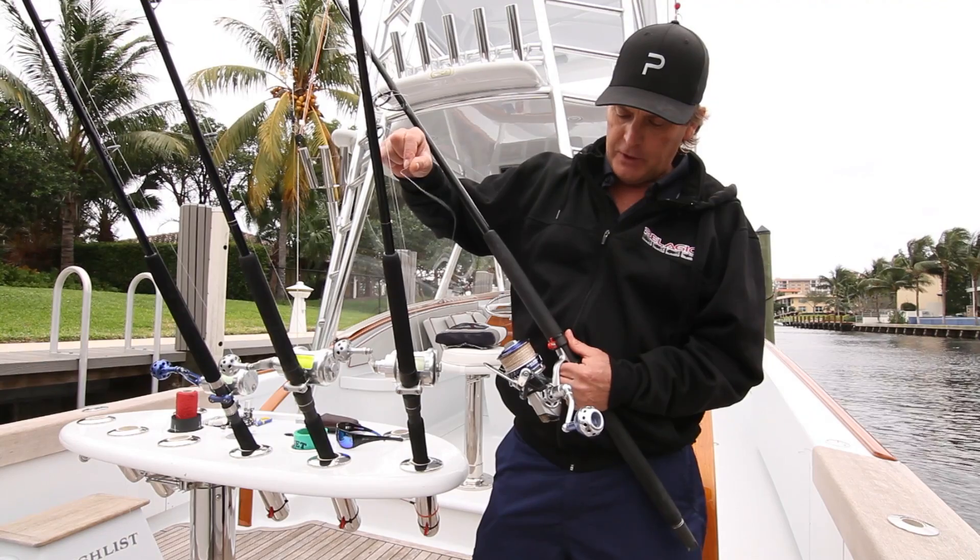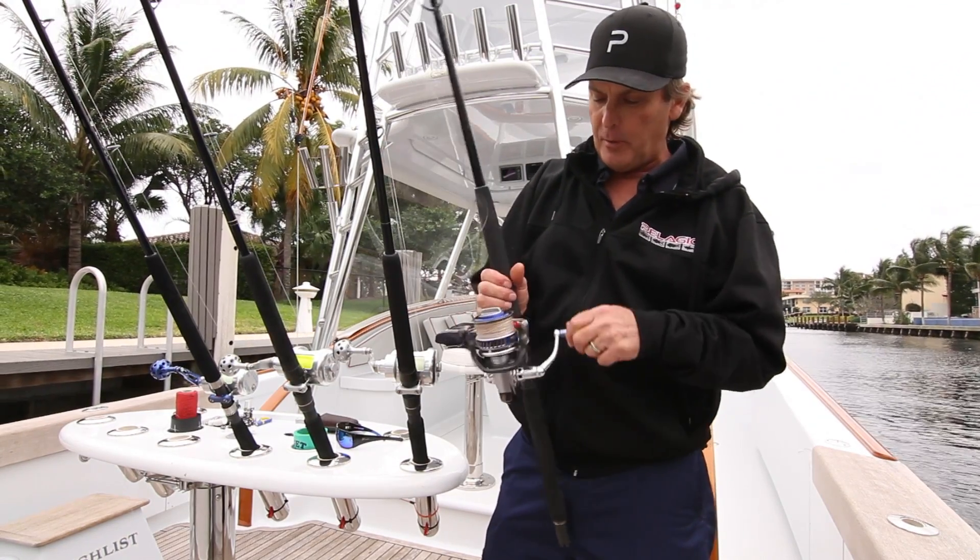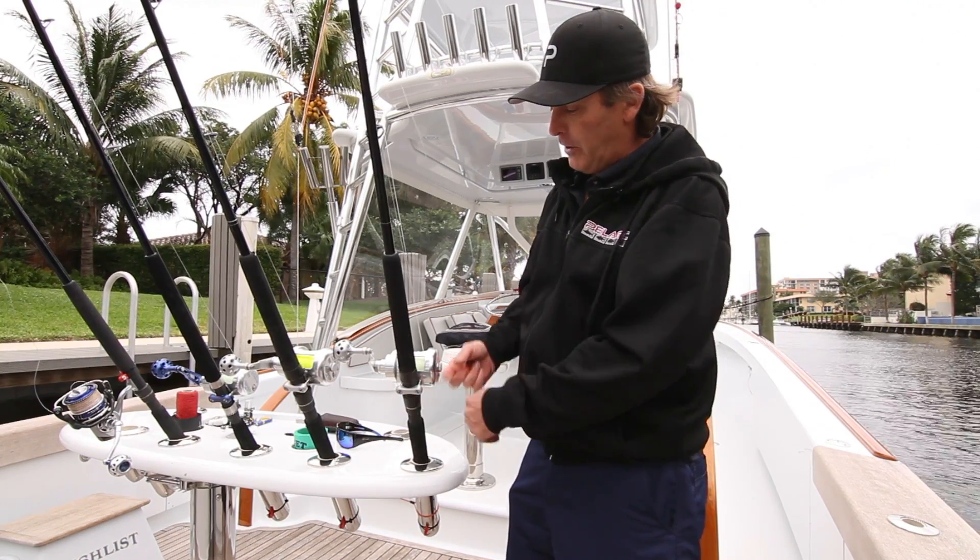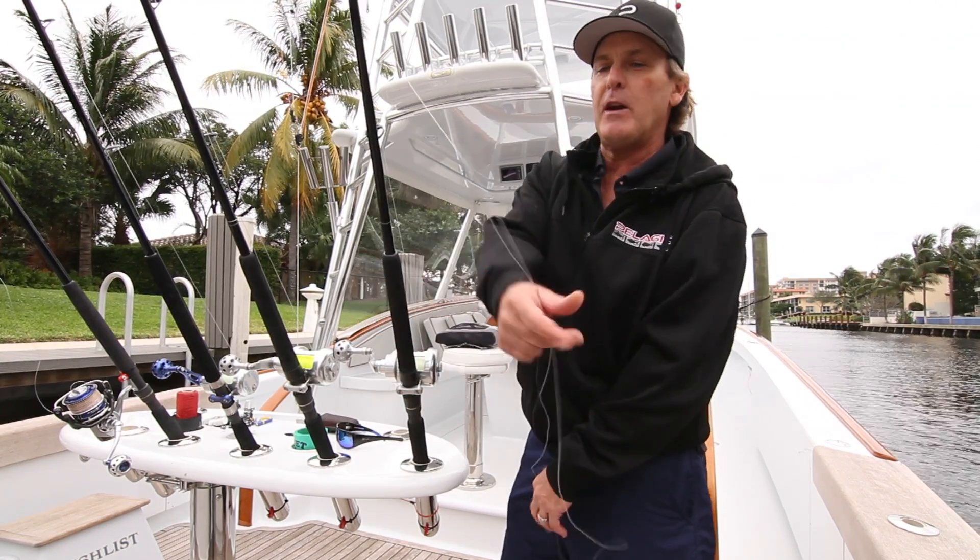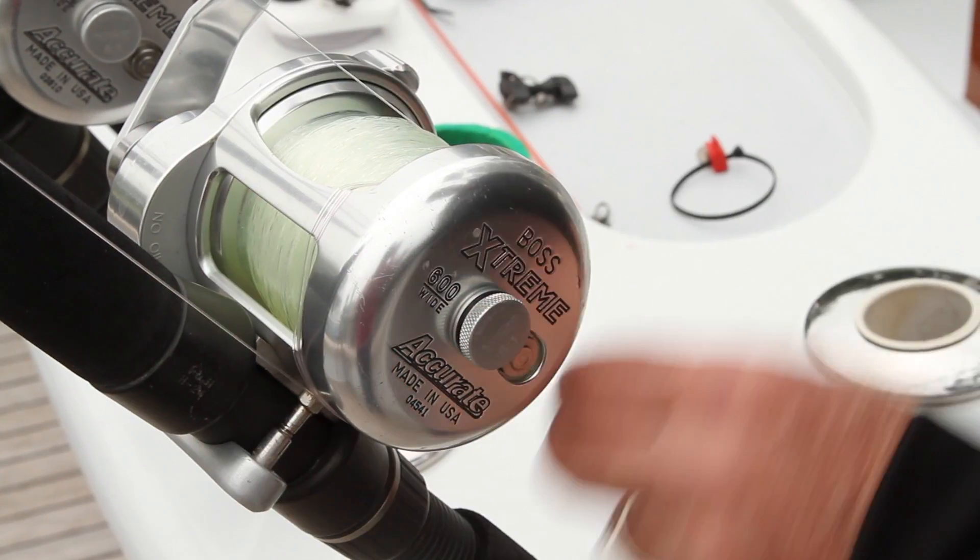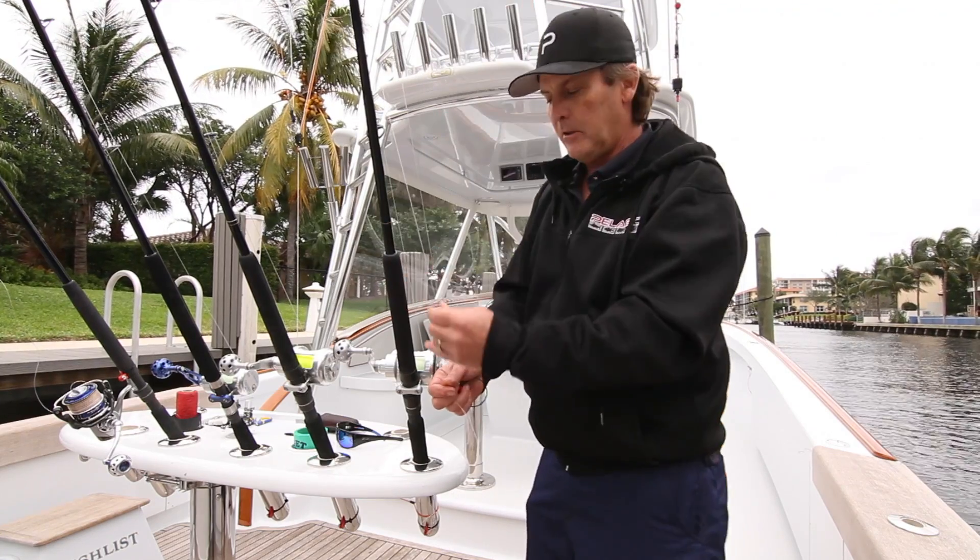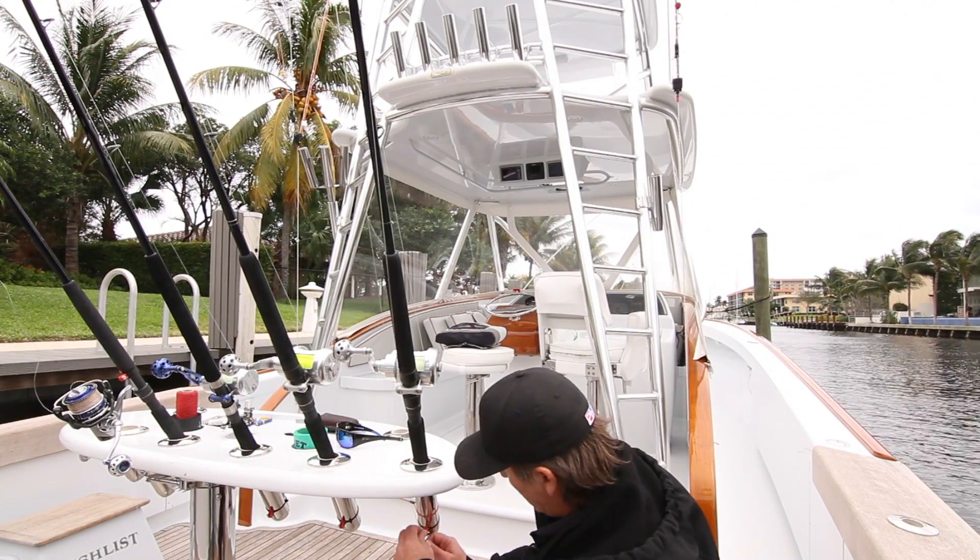This little red clip I'm holding is called a Dubrow clip. Normally, a lot of guys use them on a spinning rod to fish a bait with the bail open and free spooling. When the fish grabs it, it'll release. We've taken the Dubrow clip and found another use for it.